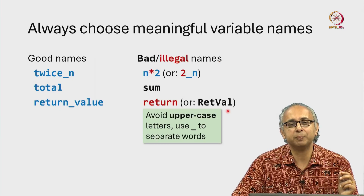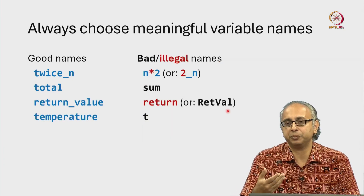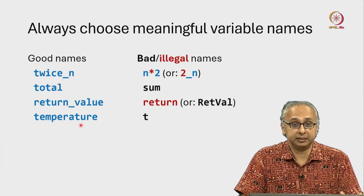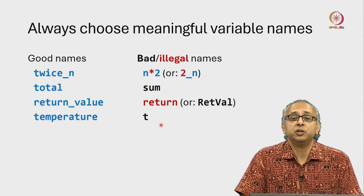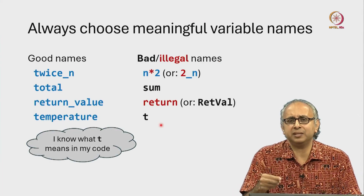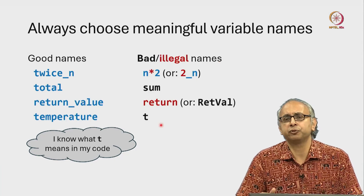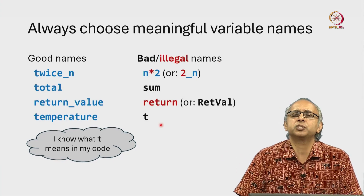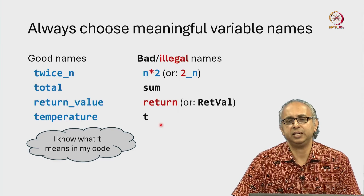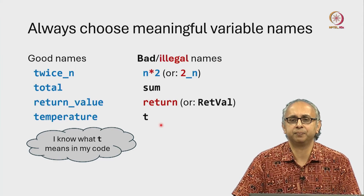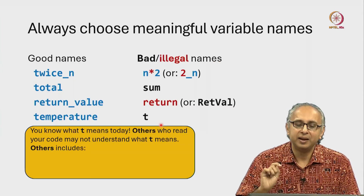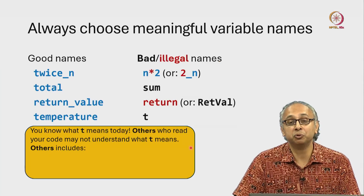As a last and perhaps most important example: imagine you are writing a program that deals with temperature. A good variable name is 'temperature'. A perfectly legal variable name is 'T', but that's a bad name. You might say, I know that T means temperature in my code — I've seen lots of physics books that use T as the symbol for temperature. But the problem is that you know what T means today, and others who read your code may not know what T means.